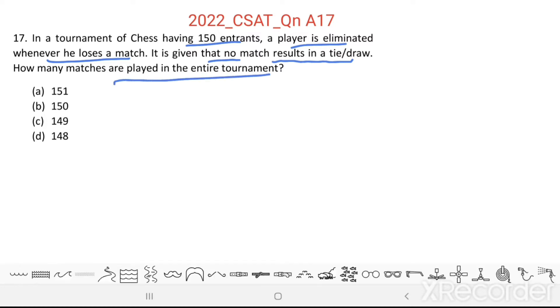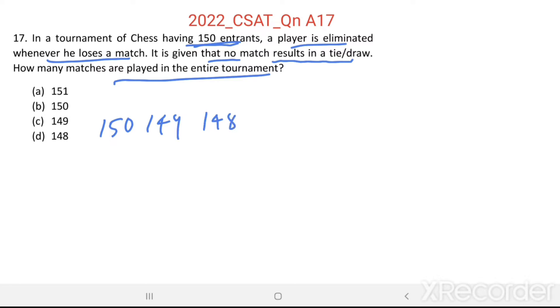Suppose an entire 150 entrants are ranked from 1 to 150. Then last seed will be 150, then 149, then 148, then 147, like this. Fourth seed, third seed, second seed, first seed.